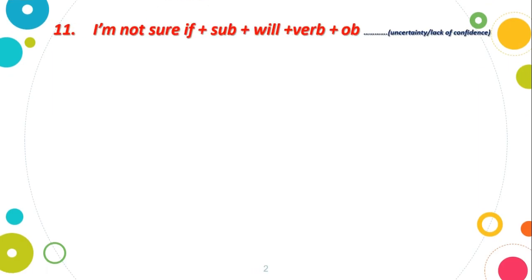First one is structure number 11: I'm not sure if - subject + will + verb + object. When we are not confident or certain about something, we use I'm not sure if to express uncertainty or lack of confidence.